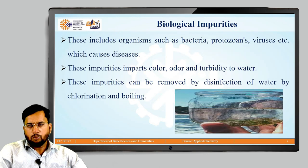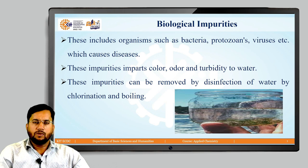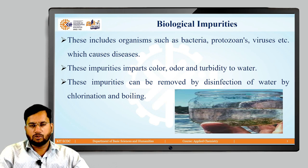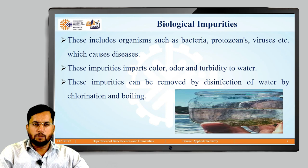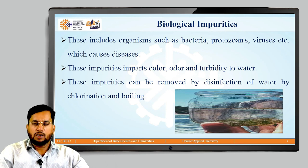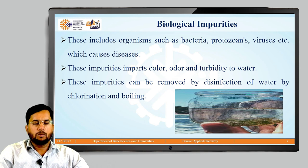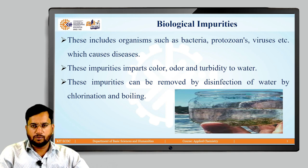Biological impurities are biological in origin, such as bacteria, protozoa, and viruses, which cause diseases. These impart colour, odour, and turbidity to water. These impurities can be removed by disinfection of water by means of chlorination and boiling.